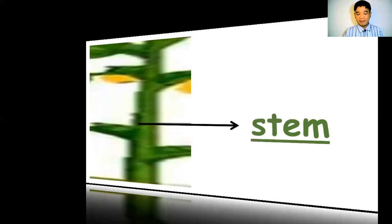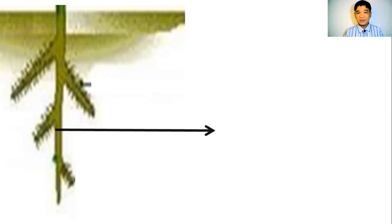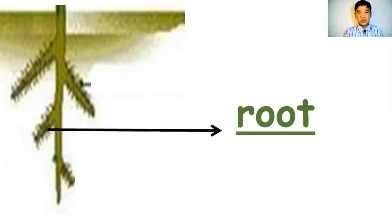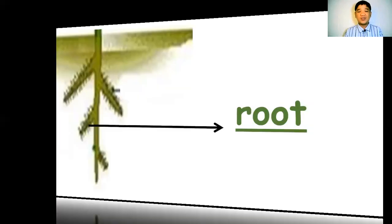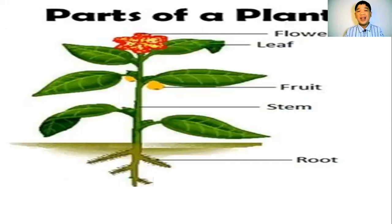The last part of the plant is one of the most important. Without this part, the plant would not be able to grow and it will not exist. We call it the root. Everybody say root. So these are the different parts of the plant: flower, leaf, fruit, stem, and root.